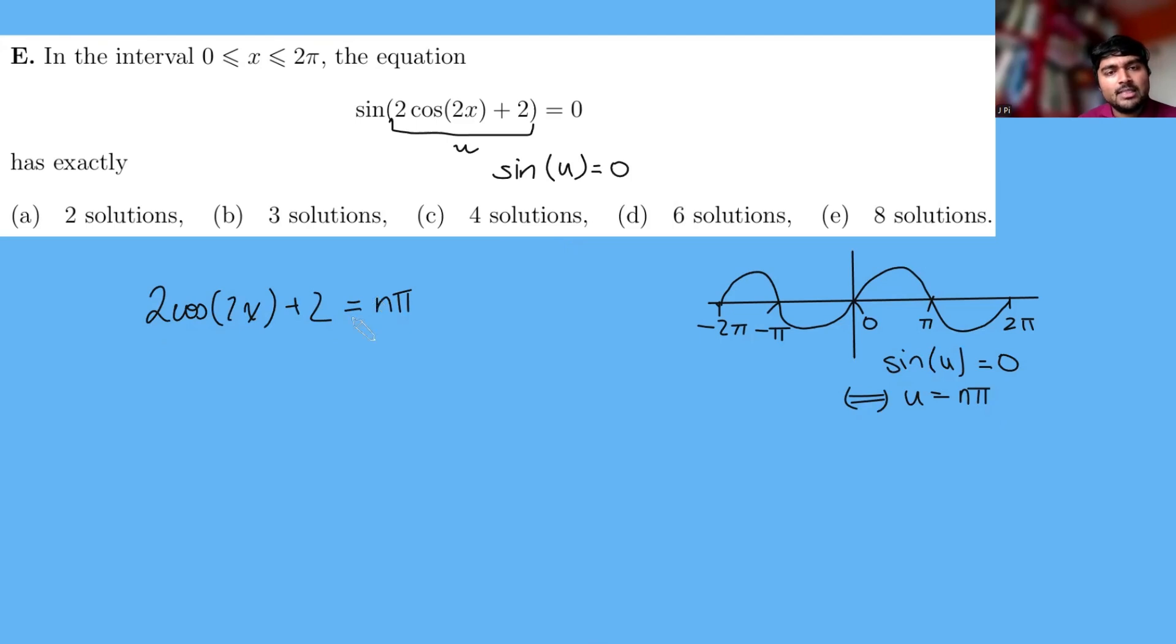Okay, cool. Well, what can we say about 2 cos 2x plus 2? We can use a trivial bound. We know cos of anything is always between minus 1 and 1, so if we double it, that's between minus 2 and 2. And if we add 2 to that, minus 2 plus 2 is 0, 2 plus 2 is 4, so this must be between 0 and 4.